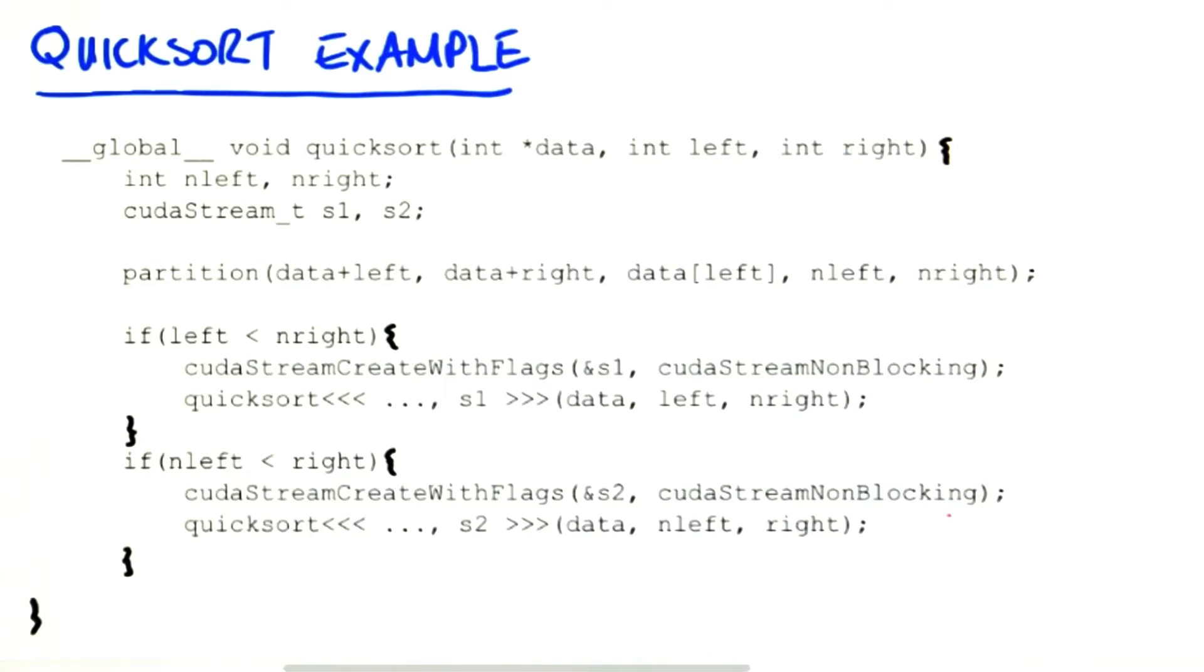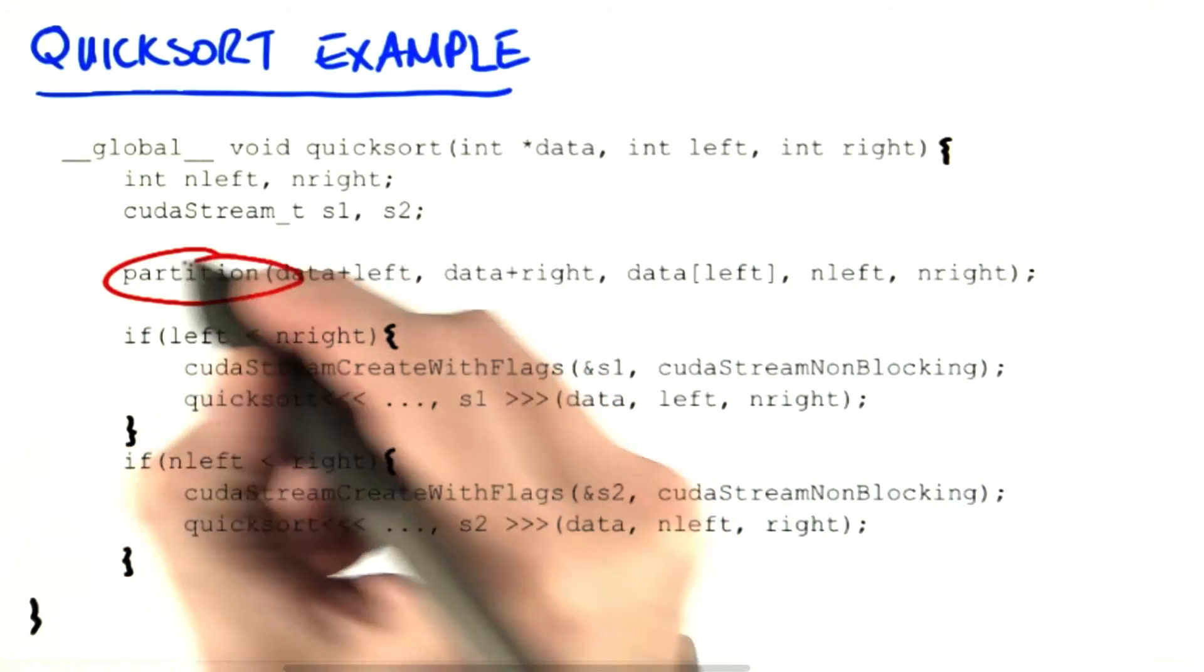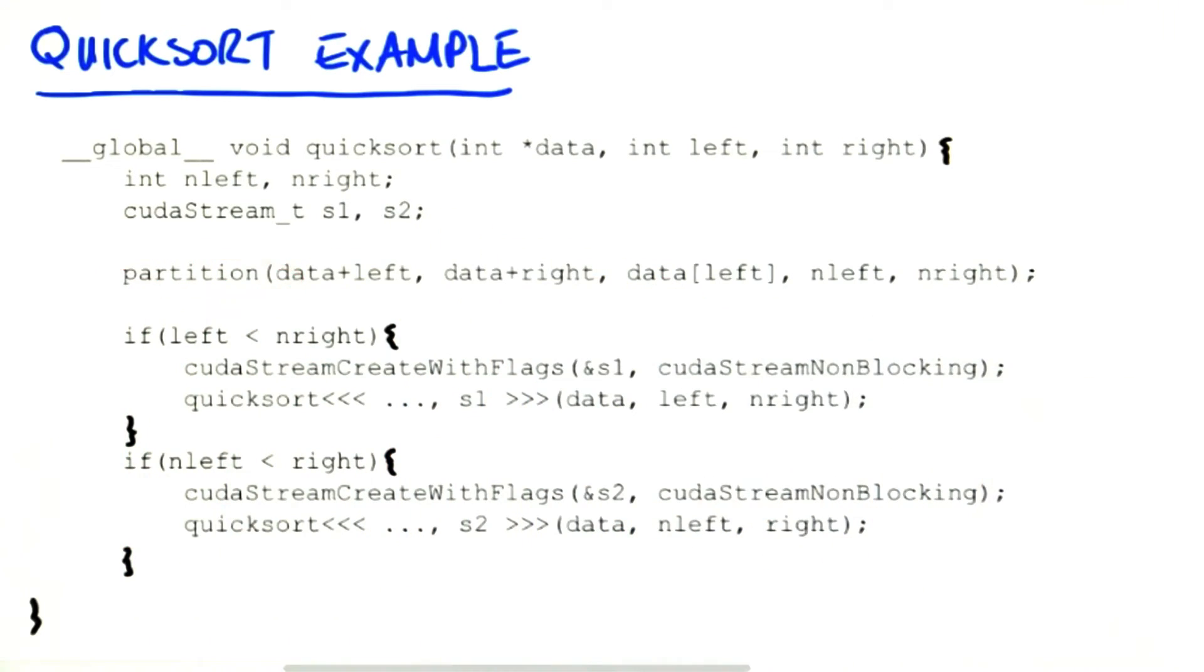So here's what the code looks like. I'm not going to get into detail about the partitioning function, because we're looking at dynamic launches here, and you already covered the partitioning in a previous lecture. The important things to notice is there's no host side management of data or launches needed. Everything happens inside the code itself.